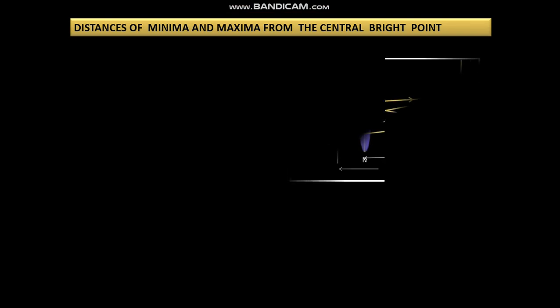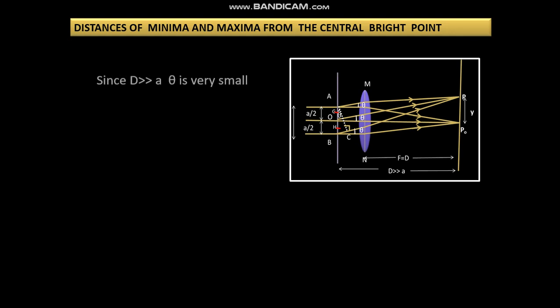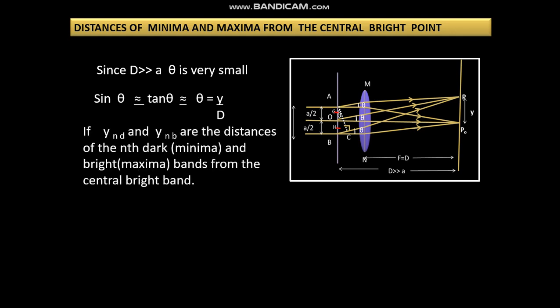Distances of minima and maxima from the central bright point. From the central bright point, we know capital D is much greater than A. Theta is very small. So sine theta can be written as tan theta. Theta is y by D. If y_nd and y_nb are the distances of the nth dark band or the minima and the bright or the maxima band from the central bright band,